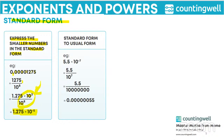Now we can convert the standard form back to usual form. We first convert the negative exponent to positive by taking it to the denominator. Then we write 10 to the power 7 as its usual form — that is 1 followed by 7 zeros. Then we divide these two numbers and get 0.00000055.